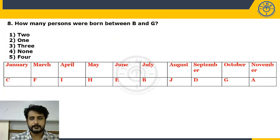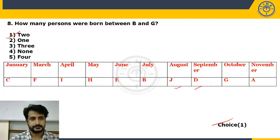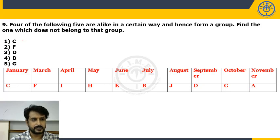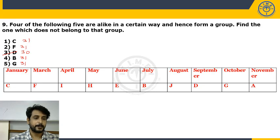How many persons were born between B and J? Between B and J there are 2 persons, but the choice given is 1. Four of the following five are alike and form a group — odd one out: C was born in a month with 31 days, F in a month with 31 days, D in a month with 30 days, B in July with 31 days, G in October with 31 days. Except D, all were born in months with an odd number of days — Choice 3.